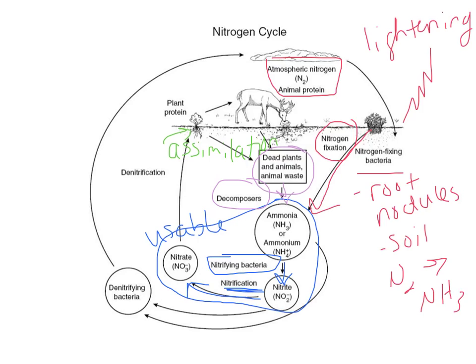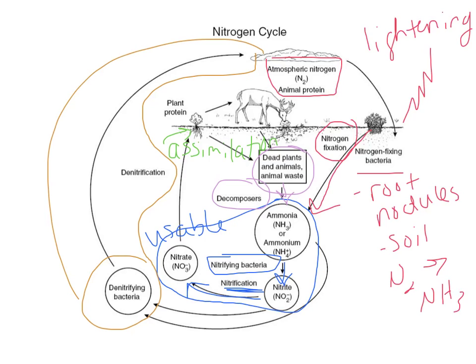At some point, some of that nitrogen will need to return to the atmosphere. Not all of those nitrates and ammonia produced get assimilated into the plant — some will go through a process called denitrification. Denitrification is when denitrifying bacteria take those nitrates and nitrites and convert them back into atmospheric nitrogen, cleaving off those oxygens. It completes the cycle. That process is called denitrification and is done by the denitrifying bacteria.